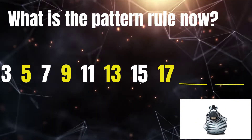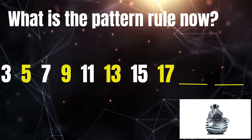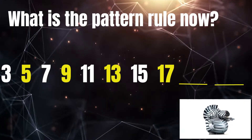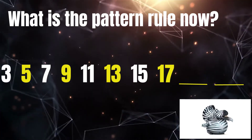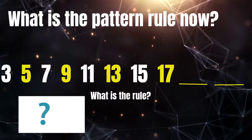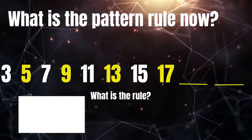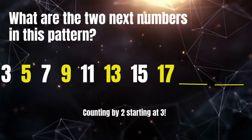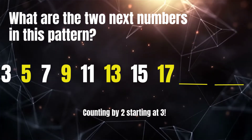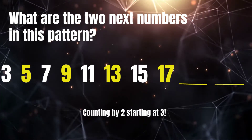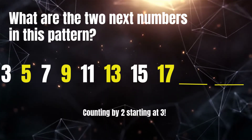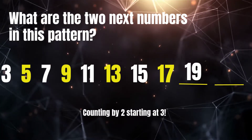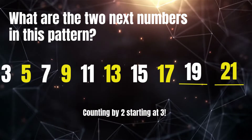What is the pattern rule now? Count with me. Three, five, seven, nine, eleven, thirteen, fifteen, seventeen. What's the pattern rule? Counting by two, starting at three. These are odd numbers. Can you guess the next two numbers in this growing pattern? Nineteen, twenty-one. Great job!